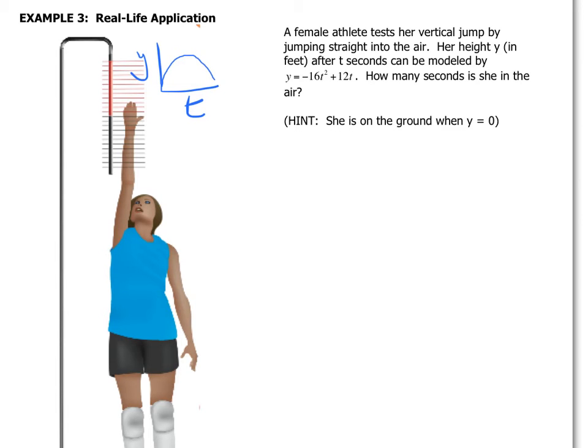But right now we're not dealing with that. We're trying to talk about how to factor this to find out how many seconds is she in the air. So remember when she's on the ground and starts the leap or the jump, she's in the air on the time, and then when she hits the ground again that's when she's going to be at zero.